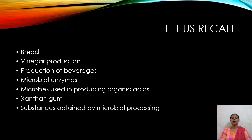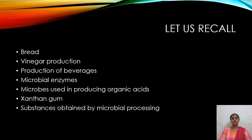First, we learned about bread — how bread is produced from flours of cereals. A dough is made using the flour, baker's yeast, salt, water and other materials. It is then allowed to ferment where sugar is converted into carbon dioxide and ethanol. The dough rises and the bread becomes spongy. Yeast is available in both dry and granular form, and various compounds are added to make it nutrient-rich.